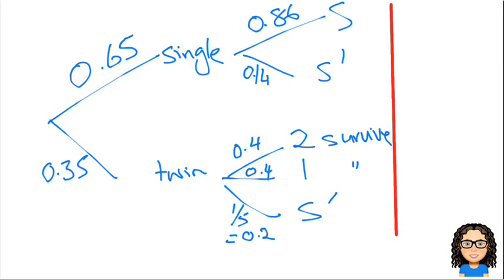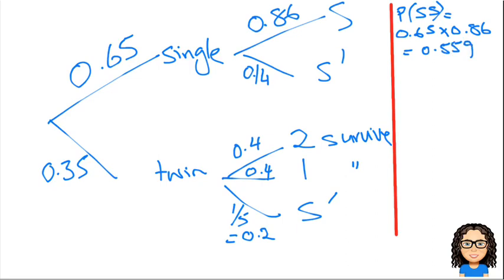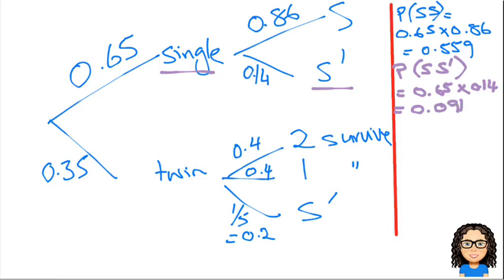Now we want to work out the different combinations by multiplying along the branches. A single lamb born where the single one survives: 0.65 × 0.86 = 0.559. The second combination is single and not survive: 0.65 × 0.14 = 0.091. Third combination is twin where 2 survive: 0.35 × 0.4 = 0.14.